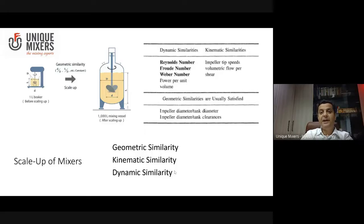And you maintain such parameters to maintain kinematic similarity and dynamic similarity is maintained when geometric and kinematic similarity are taken care of. Automatically dynamic similarities are maintained. These include parameters such as maintaining a power per unit volume, maintaining the dimensionless numbers constant such as Reynolds numbers.